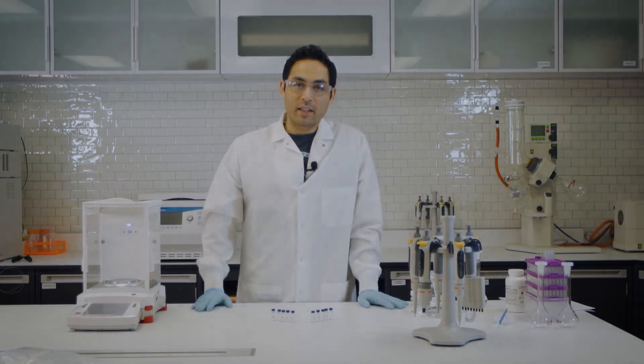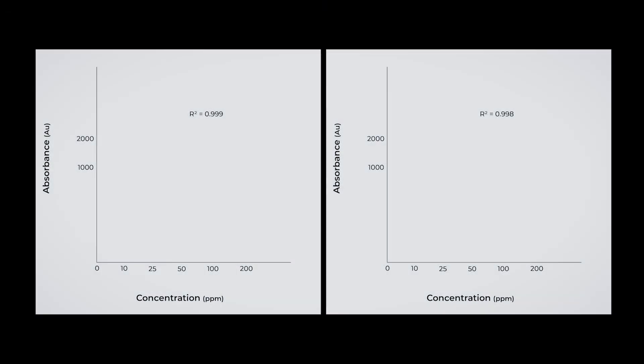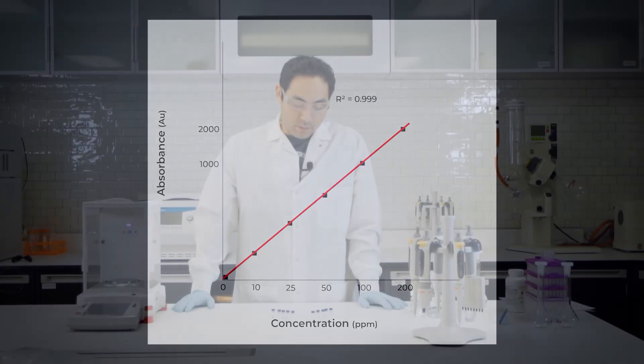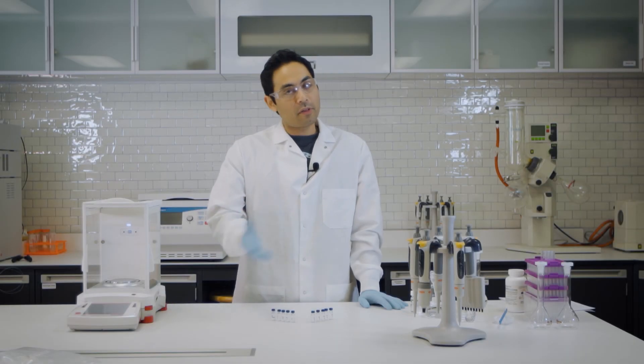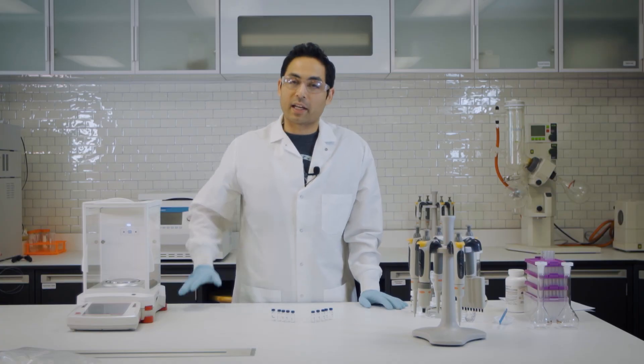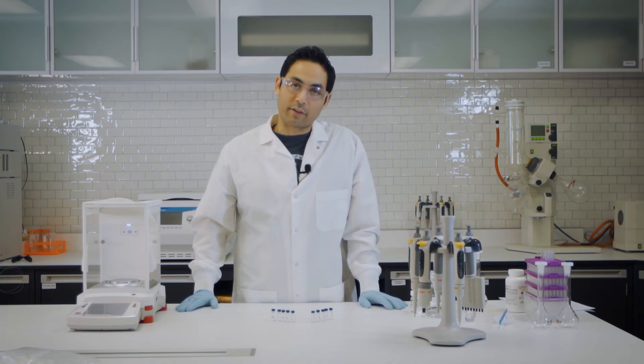So we got them in the HPLC. We ran both. And as expected, the gravimetric way of doing the cal curve was more accurate. Both were pretty spot on. The R squared values for the volumetric was 0.998. And the R squared values for the gravimetric were 0.999. So a slightly better result there. Both are very accurate. But you know, if you spend a little bit more time to do things gravimetrically, you're going to get a better result because you're just weighing every step of the way.